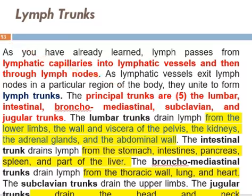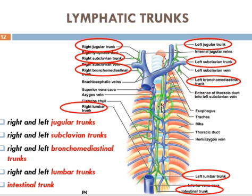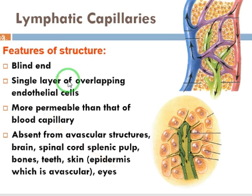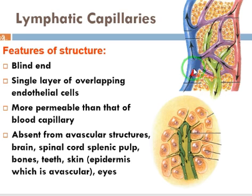Lymphatic vessels unite — two to three lymphatic vessels will form a trunk. These are comparatively large lymphatic vessels. Lymphatic vessels are blind-ended, with a single endothelial lining, which allows one-way flow.